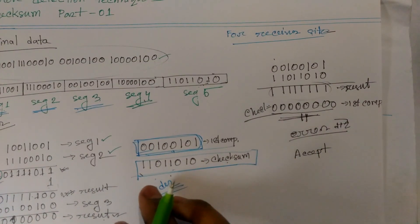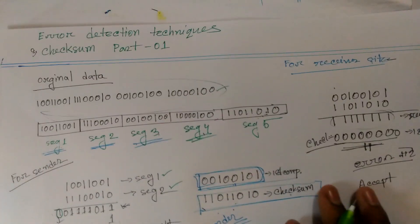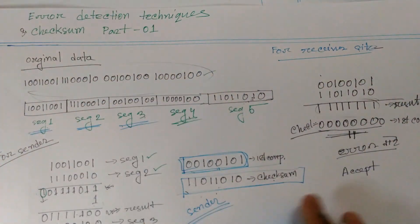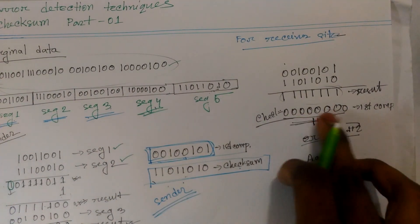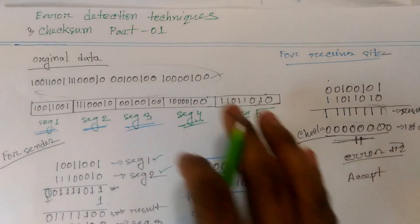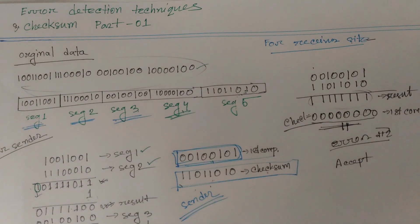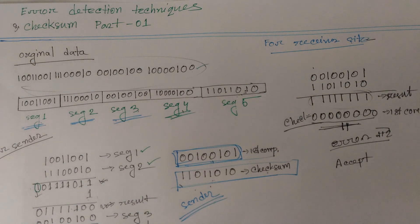If the receiver side checksum is 0, then the original checksum is 0. If the checksum is 0, it means there is no error — the error detection result is 0. If you have any errors, please don't forget to subscribe and watch the next video.